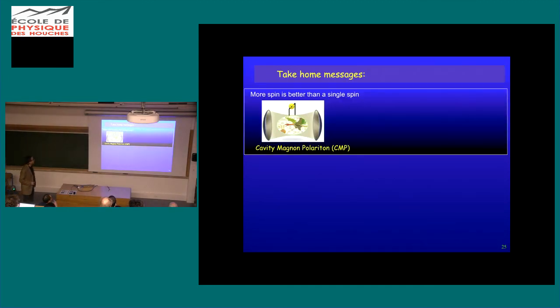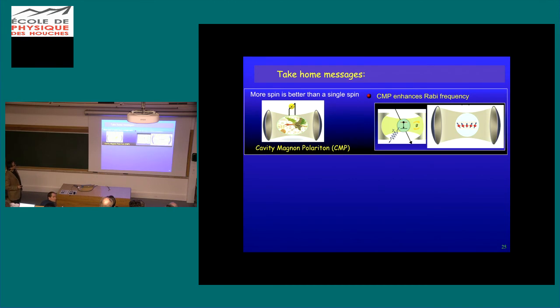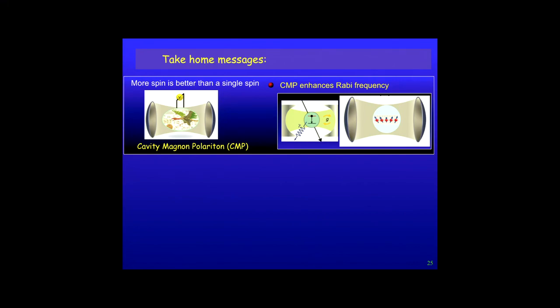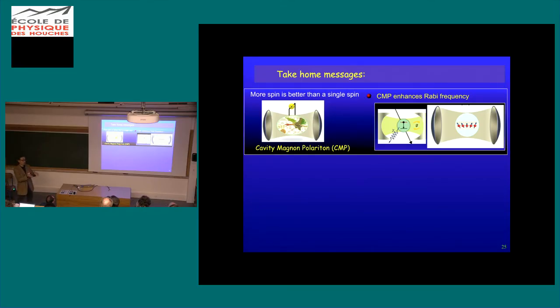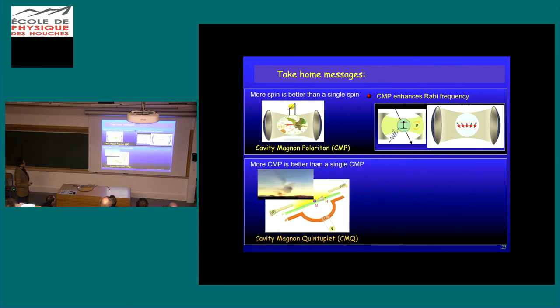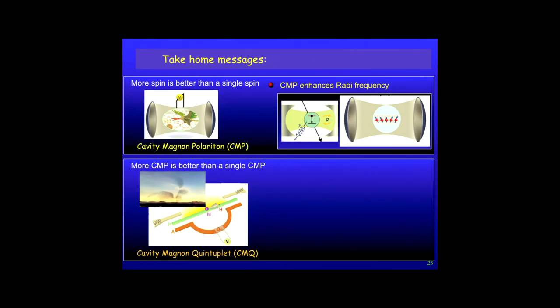With that, actually, I come to my almost final slides. What I want to tell you is that more spin is better than a single spin in the context that if you're forming this cavity magnum polariton involving essentially many, many spins locked together, coherently interacting with your photon, then the Rabi splitting is significantly enhanced. You're changing the rate from 1 Hz up to 100 MHz. But you have a price to pay and you lose the controllability using the photon number to further control the Rabi frequencies.